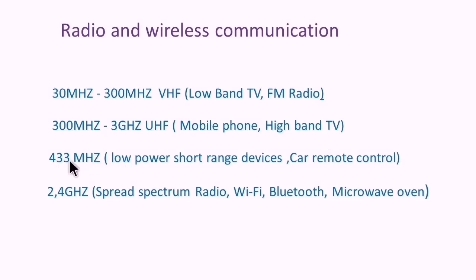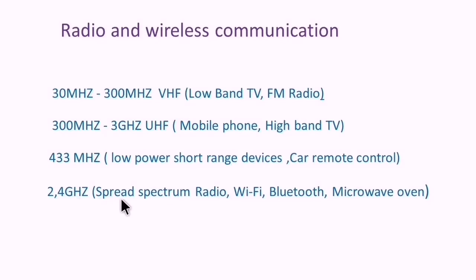433 MHz is license-free in some regions only, but not everywhere. This is useful for low-power short-range devices — for example, car remote controls. 2.4 GHz is used for spread spectrum radio, Wi-Fi, Bluetooth, and microwave ovens.